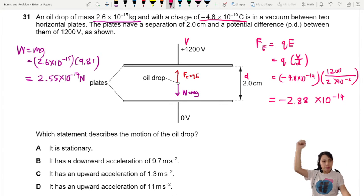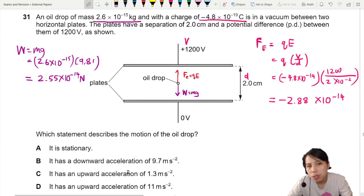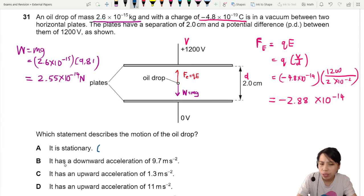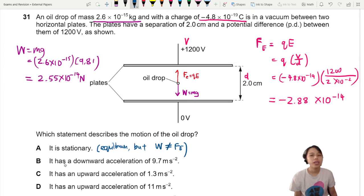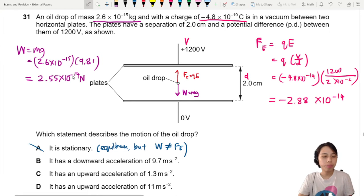It's time to do some comparison between both of these forces. It looks like it will not be stationary because stationary means you are in equilibrium but in our case the weight is not the same as our electric force. The electric force is bigger, 2.8 is bigger than 2.5 so cannot, not stationary.